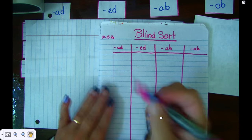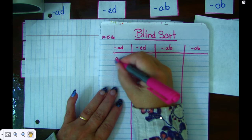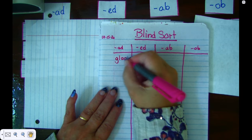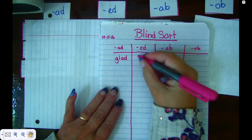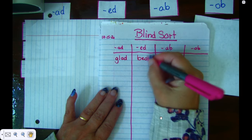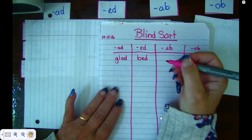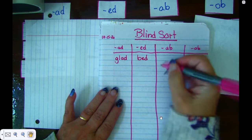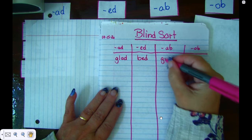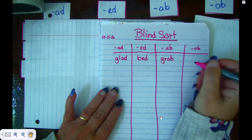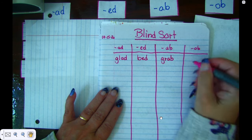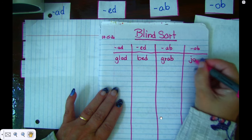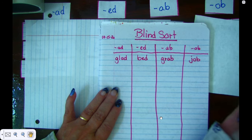I remember that the ad word, one of my ad words I like is glad. I am glad you're in my class. One of my ed words is bed. I love to be in bed. One of my ab words is grab. Grab your notebook and let's do this. And one of my ob words that I know is job. Going to school is my job and your job too.